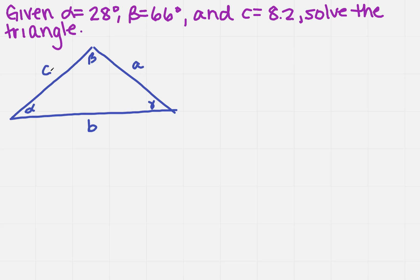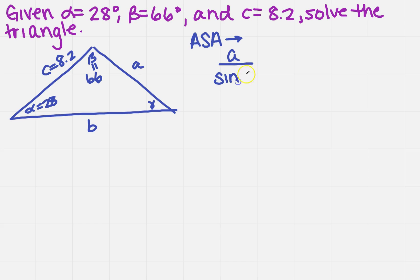Now, what do I know? I know that alpha is 28, and beta is 66, and C is 8.2. When I look at that, that gives me an angle-side-angle. You need to determine if it's angle-side-angle, side-side-side, or side-angle-side. If it's angle-side-angle, we use the Law of Sines: A over sine of alpha equals B over sine of beta equals C over sine of gamma.